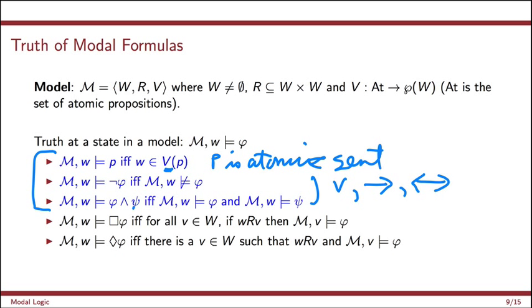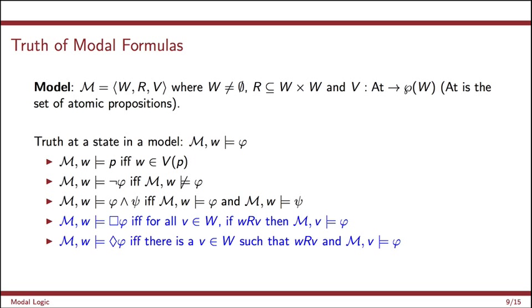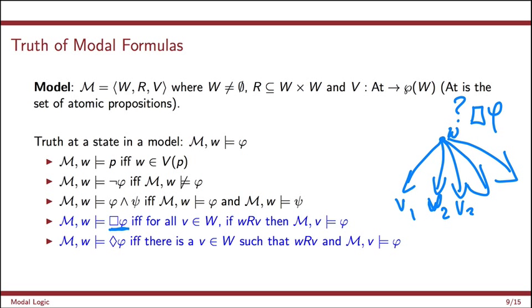But what we're really interested in are these two new modalities, box and diamond. Box is the necessary that says phi is necessary. And this is going to be true just in case for all of the accessible worlds. So we're at a state W and I want to know is it the case that box phi is true? That's what I'm interested in. Well, I'm at the state W and look at all of the relevant possibilities. There's going to be lots of possibilities that W can see. So V1, V2, V3, V4, V5. W might be able to see itself. Anyway, there's a whole bunch of different worlds that W can see. And we say that box phi is true just in case phi is true in all of these accessible worlds. And diamond phi is the dual of box. This is going to be true just in case there exists a possible world. There exists at least one possible world.